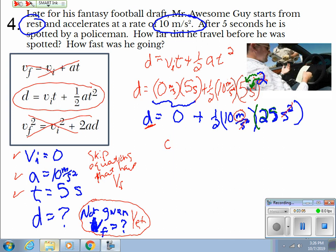Let's figure this out. D equals 0 plus anything is that. And then multiply this stuff together, you're going to get 125 meters. Cool.